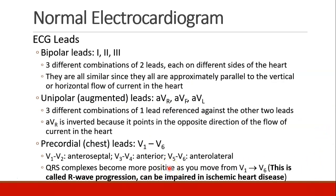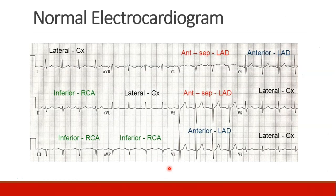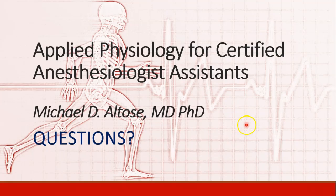Patients who have impaired R-wave progression may have ischemic heart disease. A normal 12-lead EKG provides a map of the heart, and when we see abnormalities in one or more leads, we can start to map that abnormality towards different parts of the heart. That's it for our basic discussion of EKG.